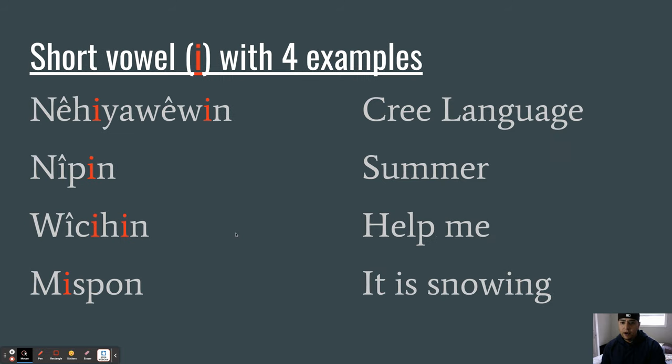Short vowel I with four examples. Listen to the sound the A makes as I go through. Nêhiyawêwin, Cree language. Nîpin, summer. Nîpin, help me. Yîpon, it is snowing. I'll say them all again for you. Nêhiyawêwin, Cree language. Nîpin, summer. Nîpin, help me. Yîpon, it is snowing.